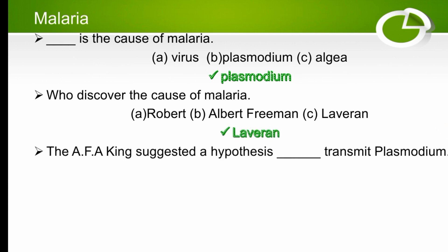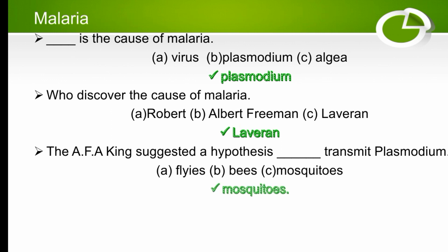Laveran also got the Nobel Prize. AFA King suggested a hypothesis that which organism transmits plasmodium? The options are flies, bees, or mosquitoes. According to his hypothesis, mosquitoes transmit plasmodium, so the right option is C.